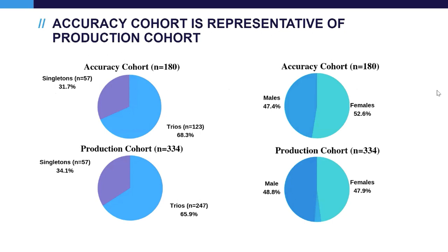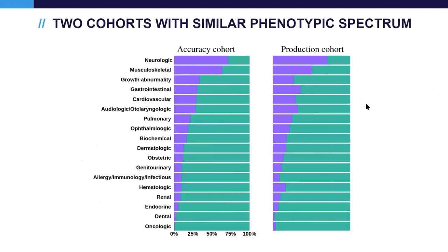Our accuracy cohort is quite similar to our production cohort, and is a good representation of our real clinical work. The main difference is that the accuracy cohort consists entirely of positive cases, while the production cohort is a mixture of positive and negative cases. Both cohorts have very similar phenotype presentations, with the top phenotypic category being neurologic and neuromuscular presentations.